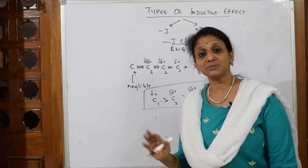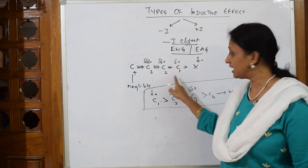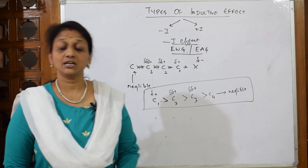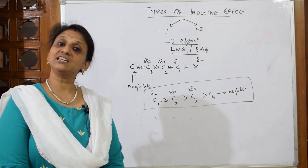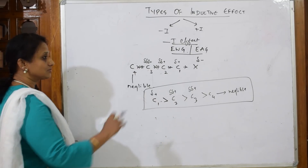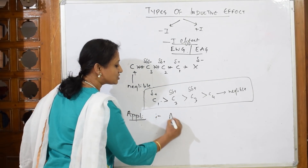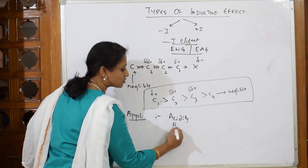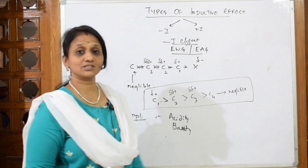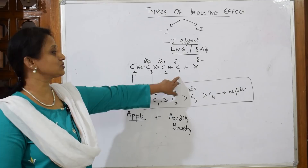The plus-I effect will differ — it is the electron releasing effect. For minus-I effect, the first important thing to remember is that it is shown by electron withdrawing groups. Minus-I effect basically explains acidic nature and basic nature — there are many examples asked in exam papers covering both acidity and basicity comparisons.